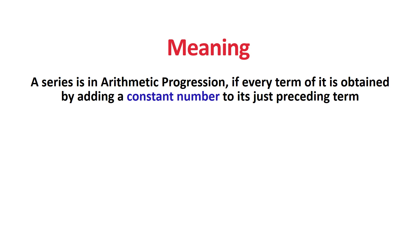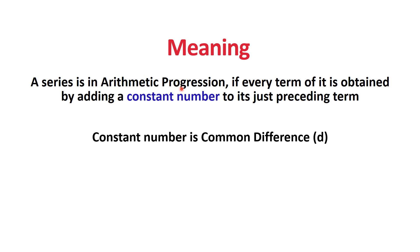A series is said to be in Arithmetic Progression if each and every term of that series is obtained by adding a constant number to its just preceding term. This constant number is called the common difference, denoted by the letter D.